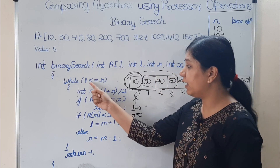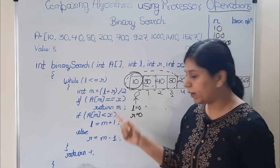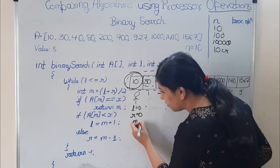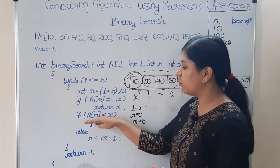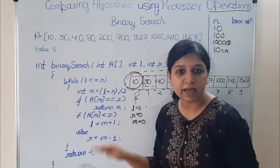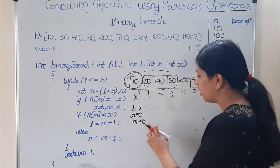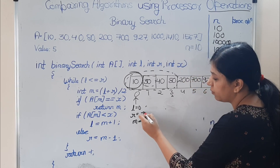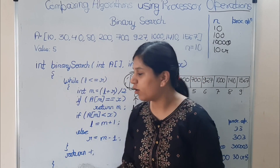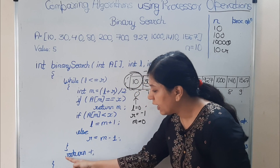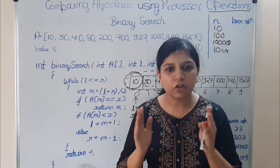We run the loop since l equals r (0 <= 0). m = (0 + 0) / 2 = 0. We compare a[0] = 10 with 5 — not equal. a[m] is not less than x, so we go to else: r = 0 - 1 = -1. The condition l <= r is now false, so we exit the loop and return -1 because the value was not found.